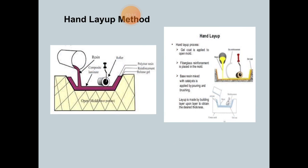On the left side the figure shows the open mold which is at the downside, then on which the roller, resin composite laminates, polymer resins, and reinforcement. On the right side there is how the process will be conducted as shown here.